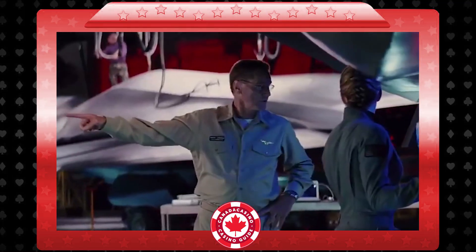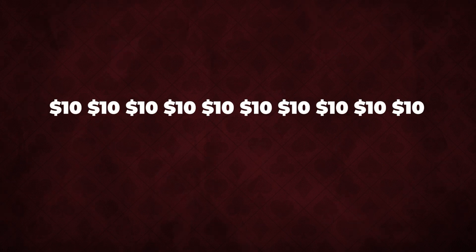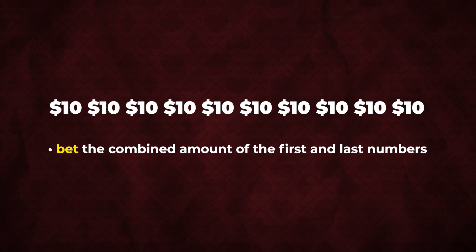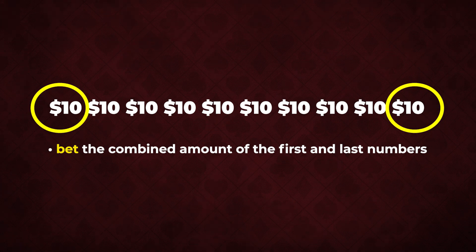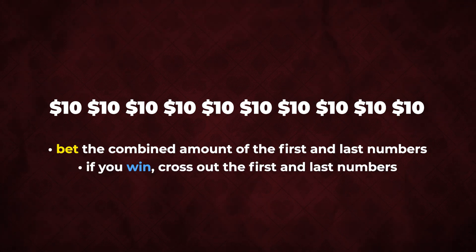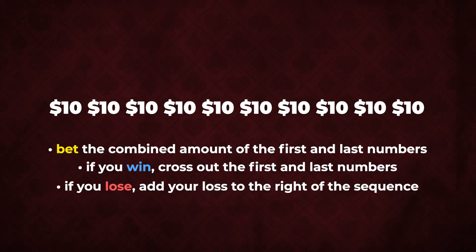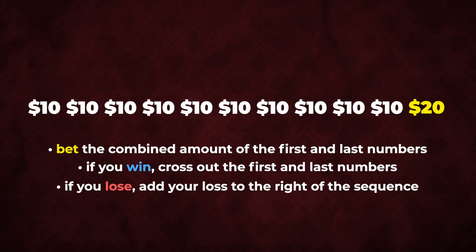First, you've got to do your homework. Let's say you want to win $100. With a $10 minimum bet, write 10 tens in a row. Then follow these three principal rules when playing: each time you bet, add the first and last numbers, resulting in $20 in this case. If you win, cross out the first and last numbers. If you lose, add a new number to the right of the sequence with the amount you lost. Repeat the process until you cross out all of the numbers and you will win $100.